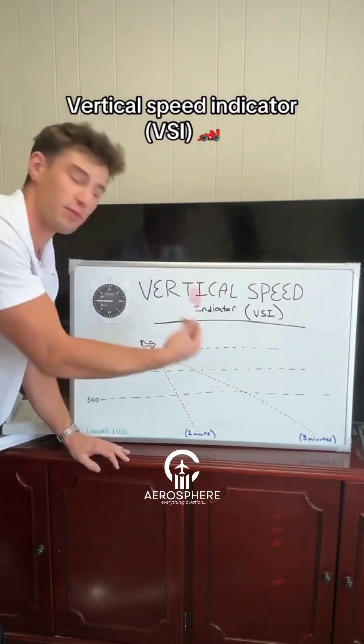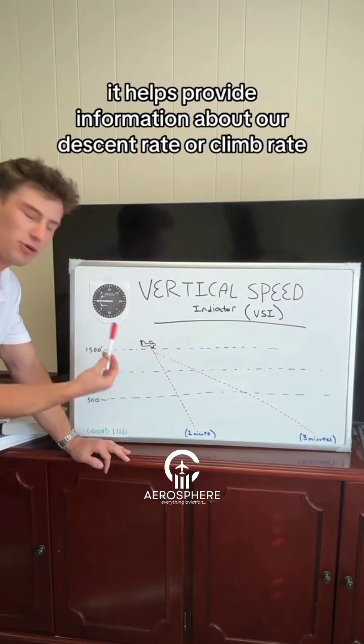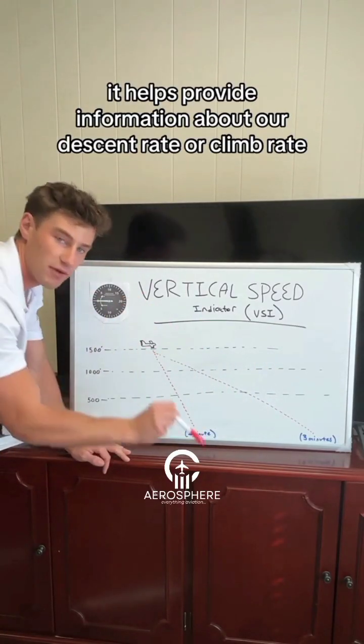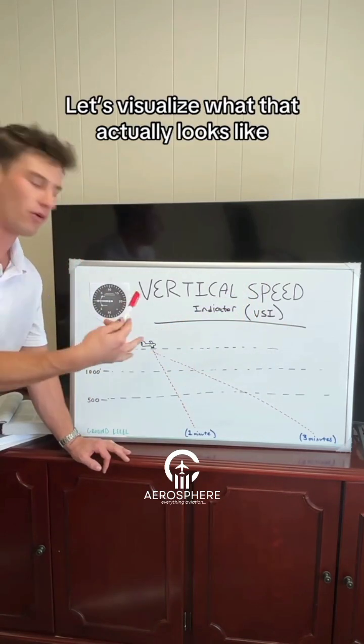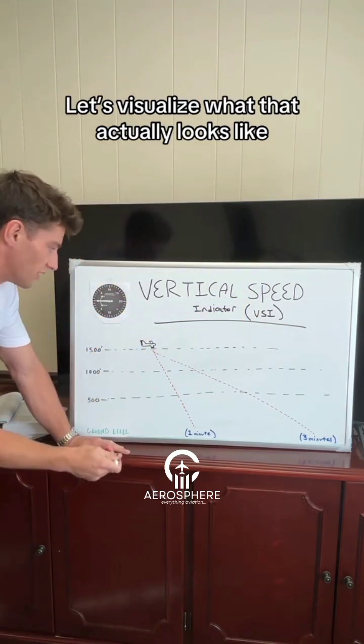Vertical speed indicator. It's part of our pitot static system and it helps provide information about our descent rate or our climb rate. But let's visualize what that actually looks like.